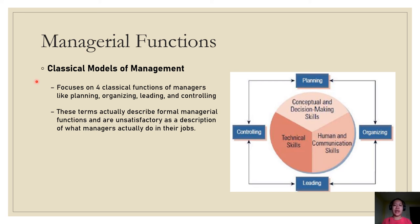The classical model of management focuses on the classical functions of managers: planning, organizing, controlling, and leading. These terms describe formal managerial functions. Planning includes setting objectives and determining in advance exactly how the objectives will be achieved. Organizing includes delegating and coordinating tasks and allocating resources to achieve objectives. Managers should also show leadership — influencing employees to work towards achieving goals. Controlling means managers should establish and implement mechanisms to ensure the objectives are achieved.